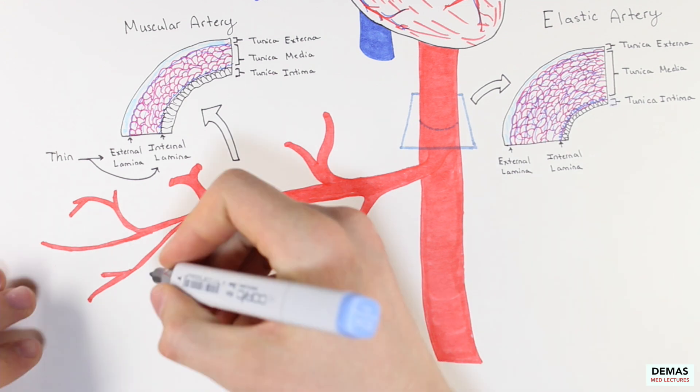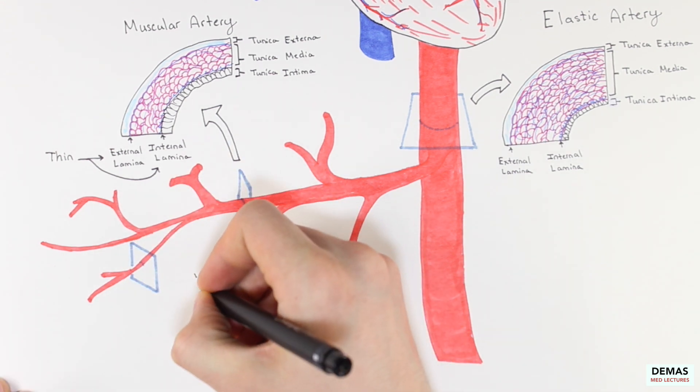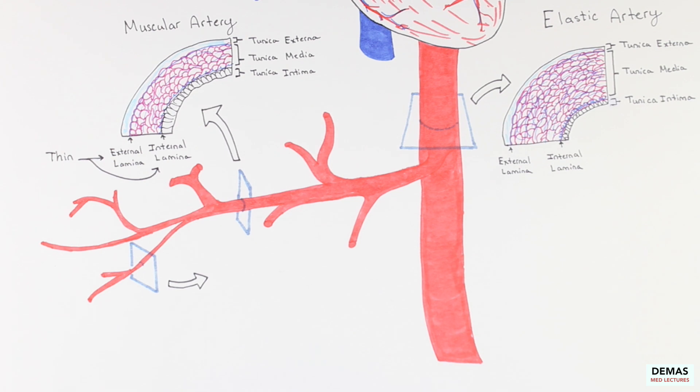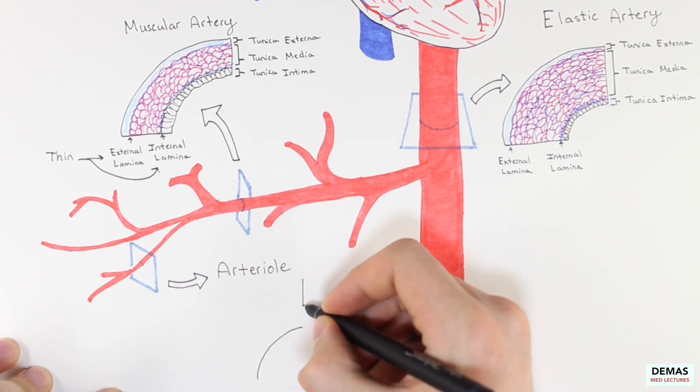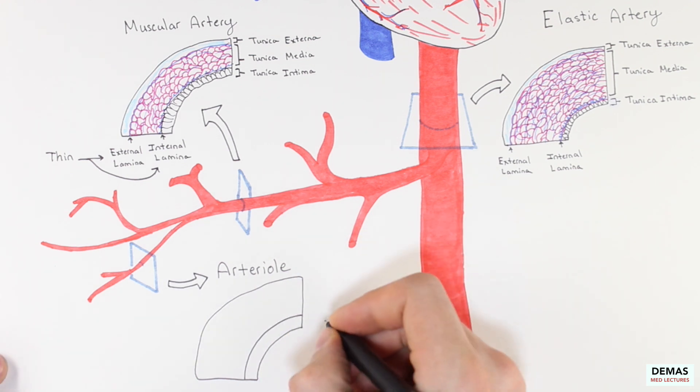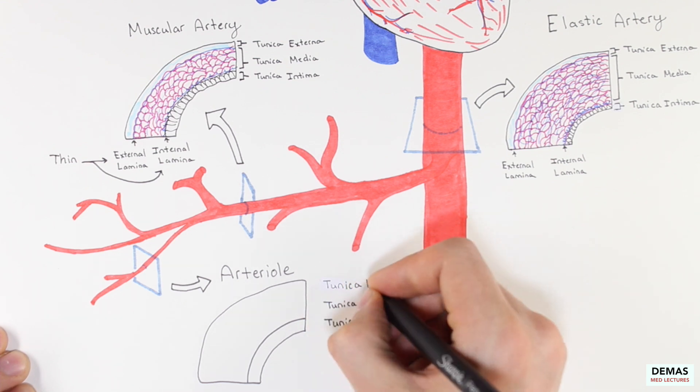The last type of artery that we will be discussing in this lecture is an arteriole. Let's go ahead and zoom in on an arteriole here. The arteriole is in fact the smallest artery and is between one to five tenths of a millimeter in diameter.